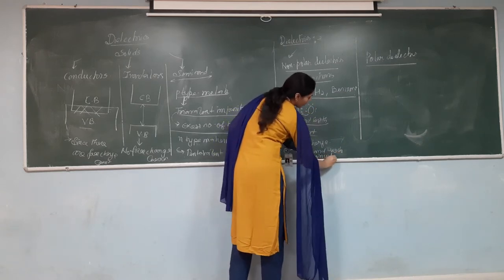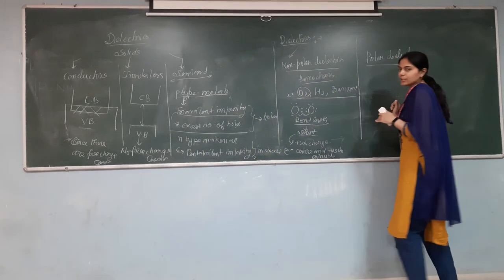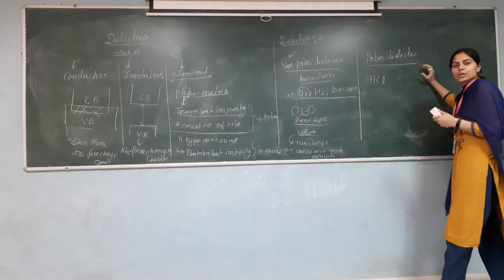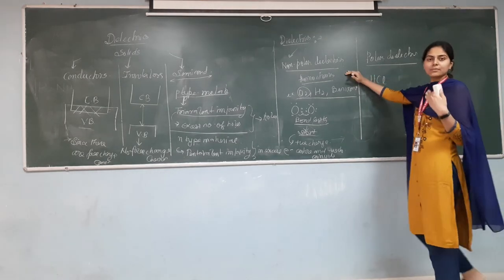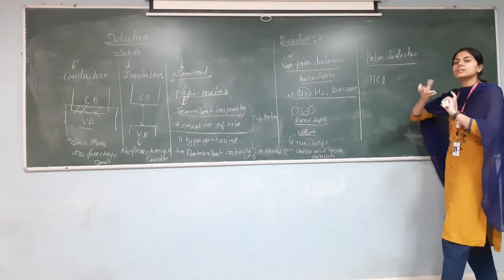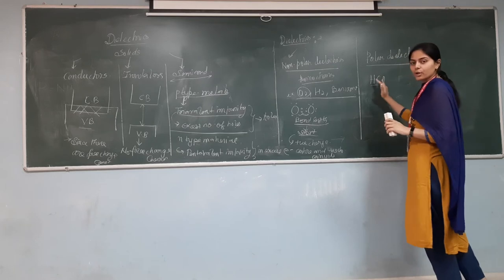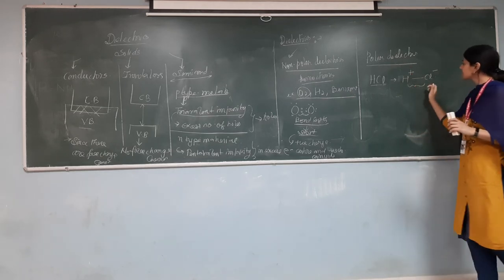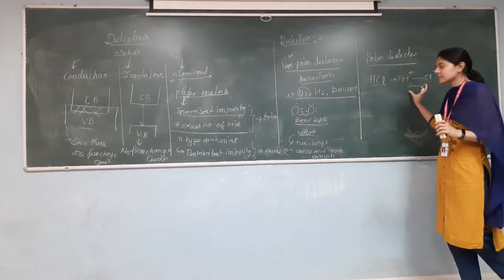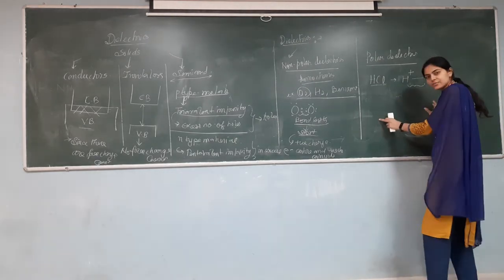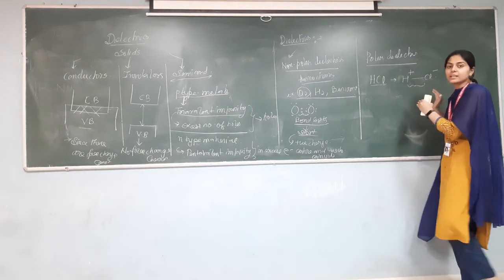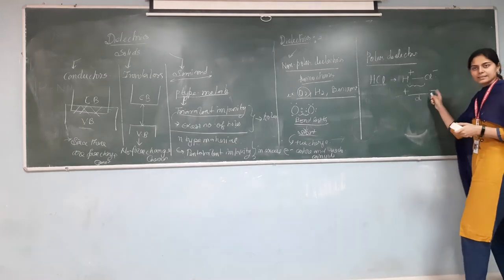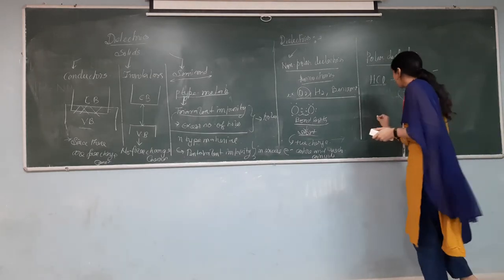In polar dielectrics, we see molecules which already have separate positive and negative centres. These involve hetero atoms — different atoms — such as HCl. In HCl (H⁺ and Cl⁻), there is a certain bond length between the two atoms, so the positive and negative centres do not coincide but instead form a permanent dipole moment, with positive and negative separated by some distance d.